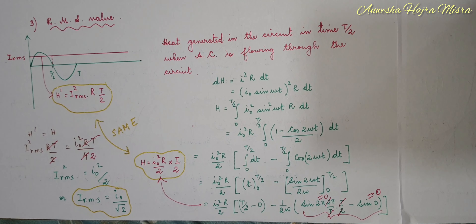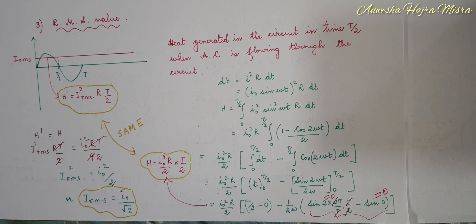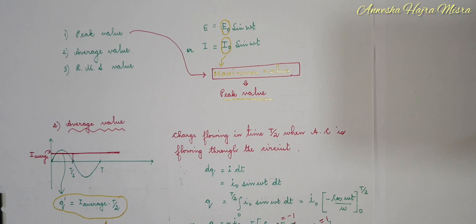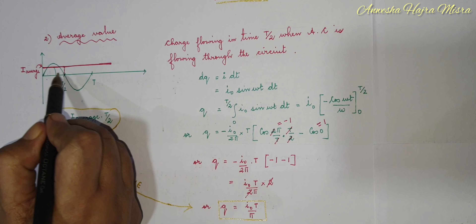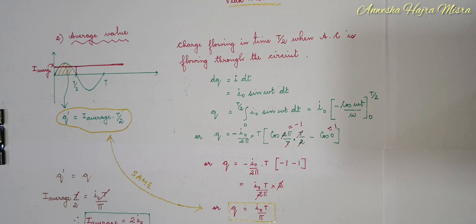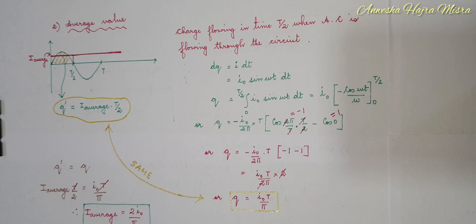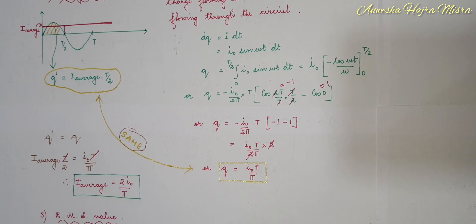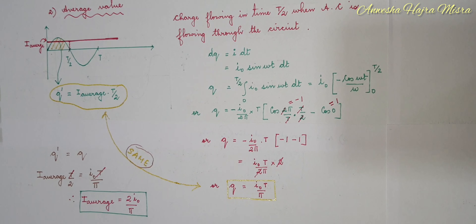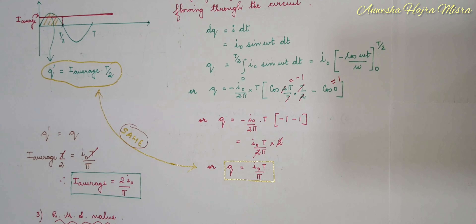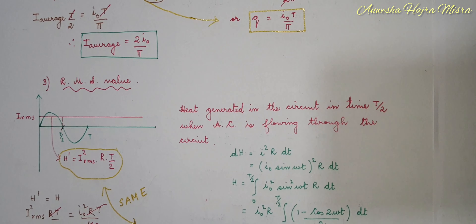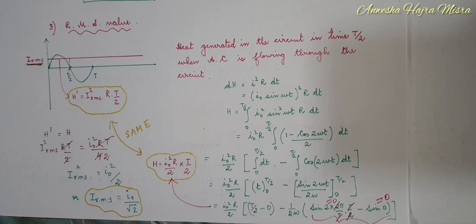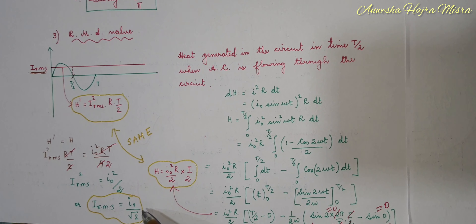So we can summarize three terms. One is the peak value, which is the maximum value. Average value: when AC is flowing, in T/2 find the charge; then consider a steady current such that in the same time the same charge flows — that is the average value of that AC, which is 2I₀/π. RMS value: AC is flowing, in T/2 find the heat; imagine a steady current producing the same heat — that is the RMS value, which is I₀/√2.